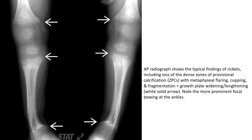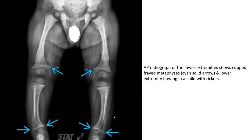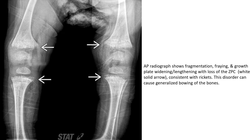AP radiographs of typical findings of rickets include loss of the dense zone of provisional calcification with metaphyseal flaring and fragmentation, plus growth plate widening and lengthening. Note the more prominent focal bowing at the ankle. AP radiographs of the lower extremities show cupped flaring metaphysis and lower extremity bowing in a child with rickets, with fragmentation, flaring, and growth plate widening with loss of the ZPC. Rickets can cause generalized bowing of the bone.